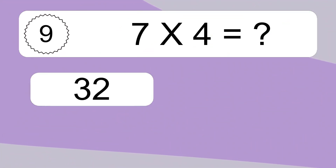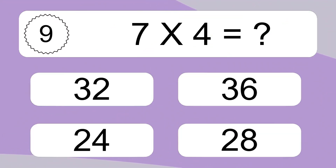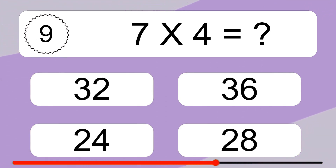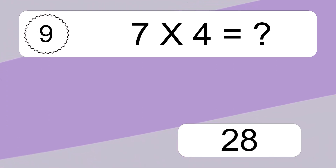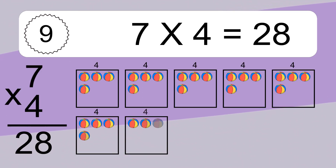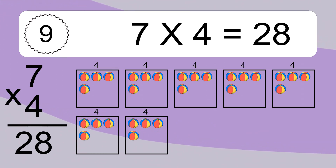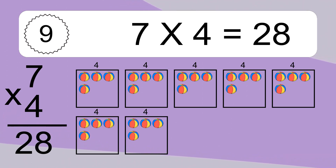7 times 4 equals what? 7 times 4 equals 28.